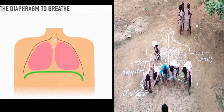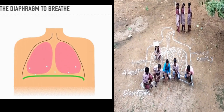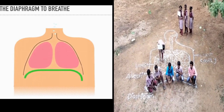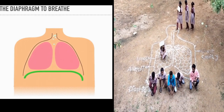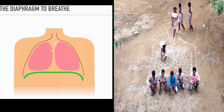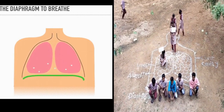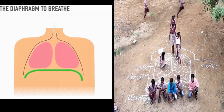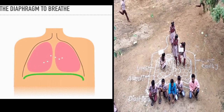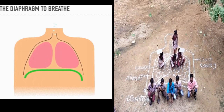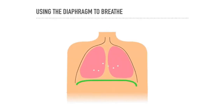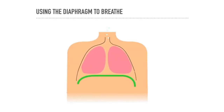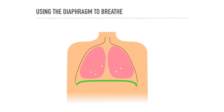Now you are seeing the role of diaphragm activity. When the diaphragm gets a flat position, air enters into the lungs — those three students are acting as air particles. When the diaphragm gets a dome position, air is sent out of the lungs.